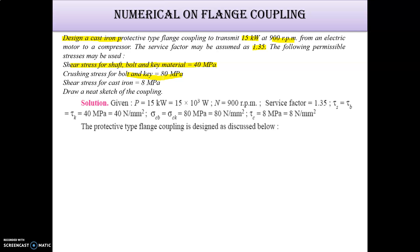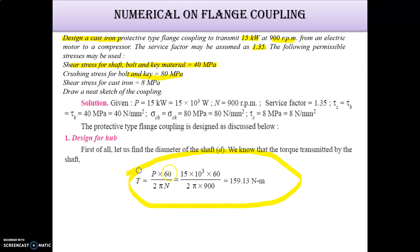Now power is this, RPM is this, service factor is 1.35, and shear stress tau A equals tau V, tau K is 40 and sigma C is here. So let's check for the torque. Torque equals P times 60 divided by 2 pi N, so 159.13 Nm. Torque multiplied by the service factor will give you the maximum torque that can be transmitted, so 215 Nm is the maximum torque.